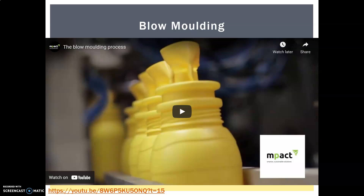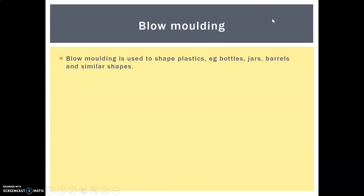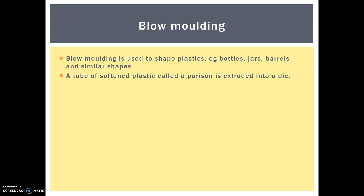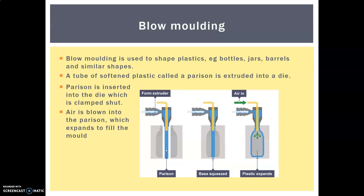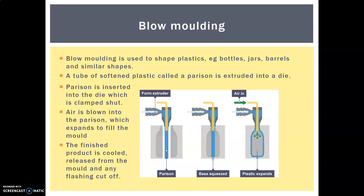Next up is blow moulding, which is used to shape plastics into bottles, jars, barrels and similar shapes — if it's not injection moulded, it's probably blow moulded. A tube of softened plastic called a parison is extruded into a die, the die is clamped shut, and air is blown into the parison so it expands to fill the mould. The finished product is cooled, released, and any flashing at the top or bottom is cut off. Really clever.